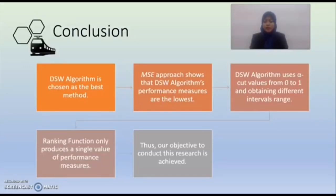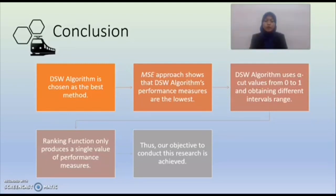In conclusion, the DSW algorithm is chosen to be the best method in evaluating the fuzzy queuing performance compared to the ranking function method. The MSE approach shows that the DSW algorithm's performance measures are the lowest. The DSW algorithm uses alpha-cut values from 0 to 1 and obtains different interval ranges, while the ranking function method only produces a single value of performance measure. Thus, our objective to conduct this research is achieved.